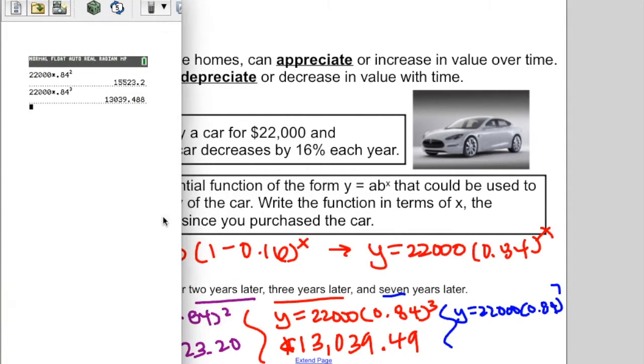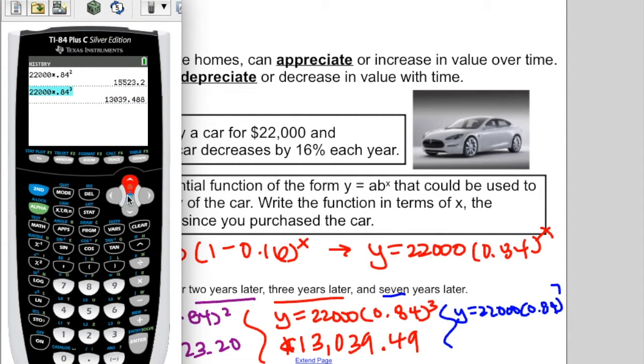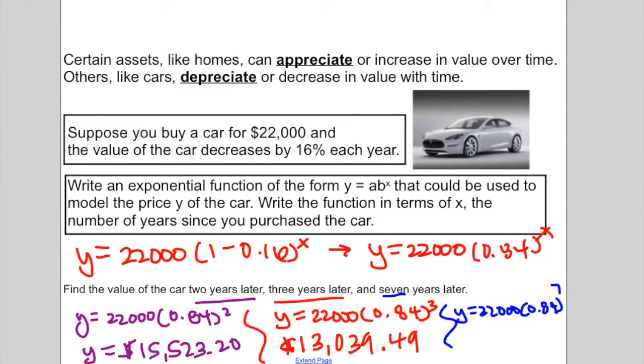And seven years later, we will go ahead and plug in 7. Seven years later, the value of the car will be $6,491.99. So it doesn't take long to lose, if you look at it, in seven years, you will lost quite a bit of money on your car. The value of cars depreciates a lot, and it happens quickly, so something to keep in mind as you're maybe thinking about buying a car.